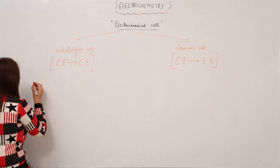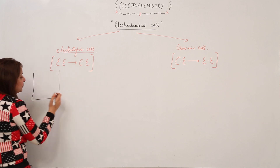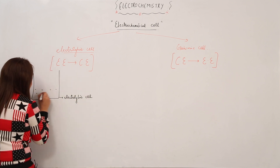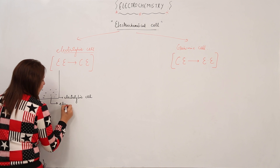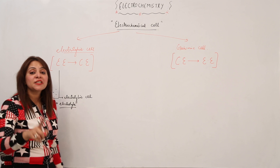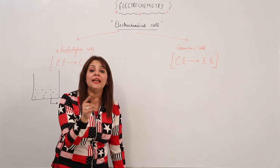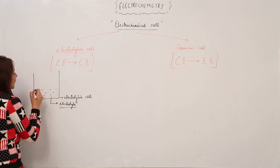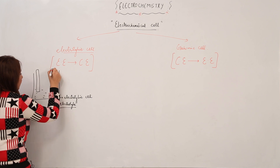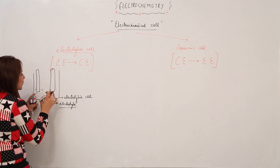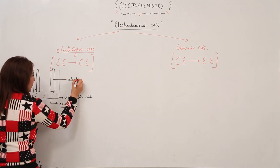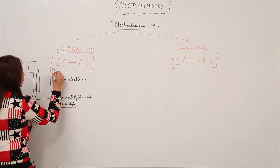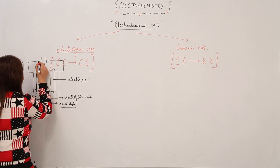An electrolytic cell consists of a beaker containing a solution — that is, it contains an electrolyte. An electrolyte is a substance which dissociates on passing electric current; electricity is passed and it gets split, which is why it is called an electrolyte. We have electrodes in it — the electrodes pass the current into the solution. They are mostly formed of graphite, a form of carbon, and are connected by means of wire to a battery. In the diagram, two lines indicate the battery.